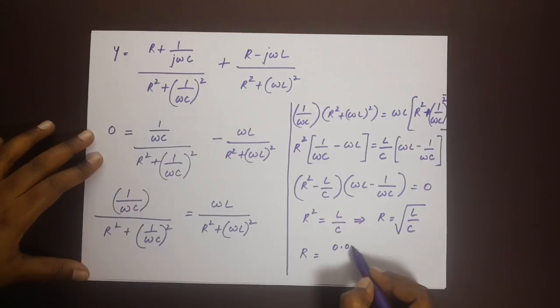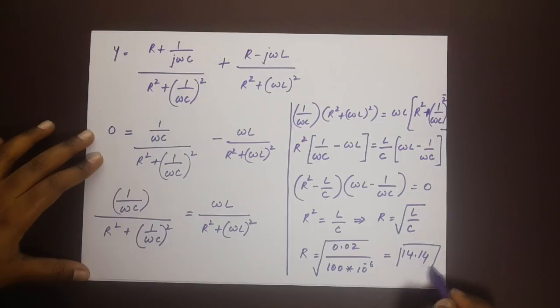Let me write that down: 0.02 divided by 100 into 10 power minus 6 root. This should give us a value of 14.14 resistance.